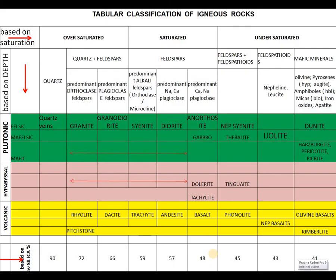This is the tabular classification of igneous rocks, where three parameters are shown: based on saturation — oversaturated, saturated, and undersaturated; based on silica percentage shown at the bottom of the table; and based on depth, that means mode of occurrence — plutonic, hypabyssal, and volcanic igneous rocks are mentioned. These three parameters are clubbed in a single table, and the rocks are mentioned as per their characteristic features.